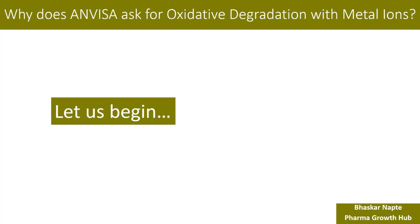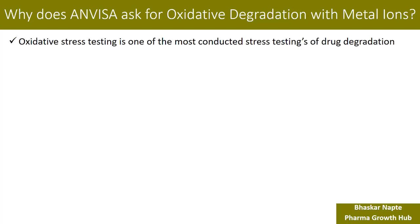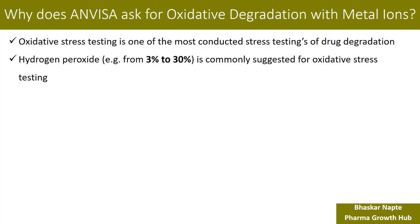Oxidative stress testing is one of the most conducted stress testings of drug degradation, along with hydrolysis, thermal, or photolytic degradation. This is a very fundamental requirement of forced degradation during method validation or stress testing during stability study. Hydrogen peroxide, generally in the concentration range of 3% to 30%, is commonly suggested for oxidative stress testing.